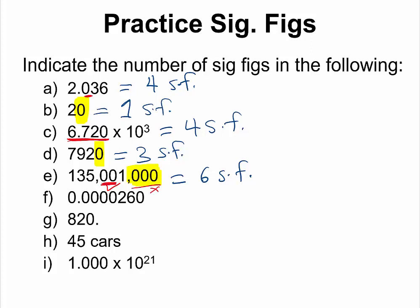For question F, we have a number of leading zeros here, and remember, leading zeros are not considered significant. We also have a trailing zero here, but this trailing zero is significant because it follows somewhere behind a decimal. So how many significant figures do we have in F? We have three significant figures. In question G, we have a trailing zero that is followed by a decimal, so that gives us three significant figures.